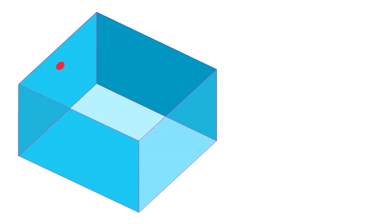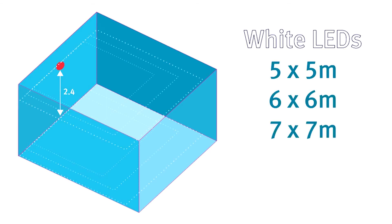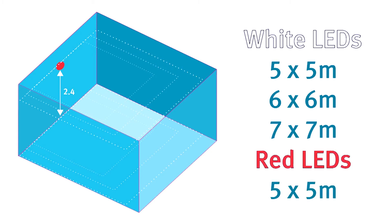For the wall beacons, the coverage volumes are based on a maximum height of 2.4 metres from floor level. So again, subject to your control panel, you can set the coverage to 5 by 5, 6 by 6, or 7 by 7 metres for white LEDs, and 5 by 5 metres for red LEDs.